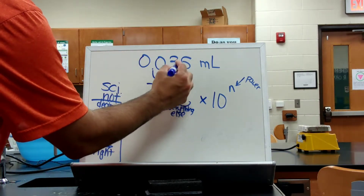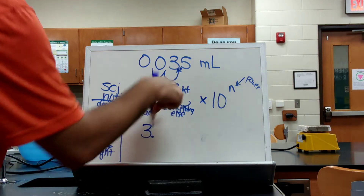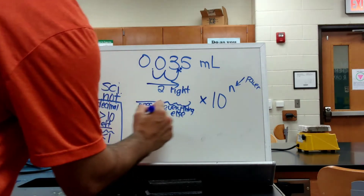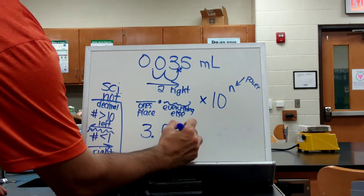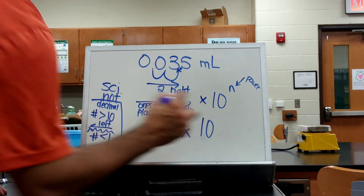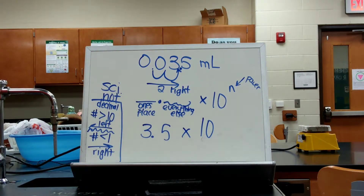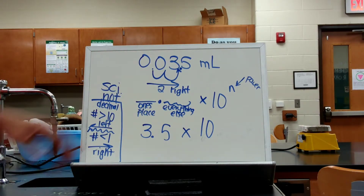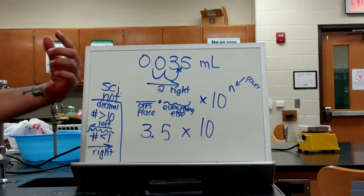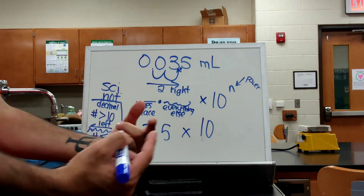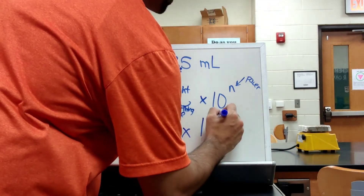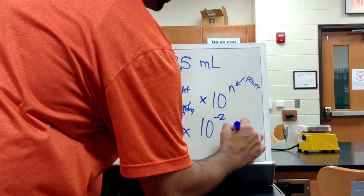Now I have my number as 3.5. The ones place is 3, everything else is 5, times ten to the — how many times did I move it to the right? I moved it to the right two times. If I move it to the right and I made this number bigger than it actually is, my exponent is negative: times ten to the minus second milliliters.